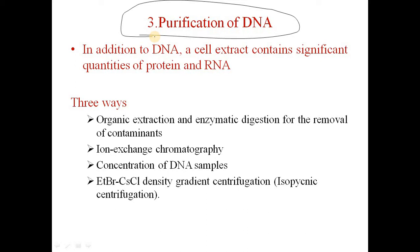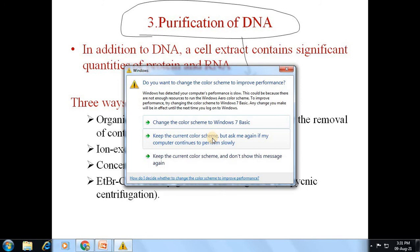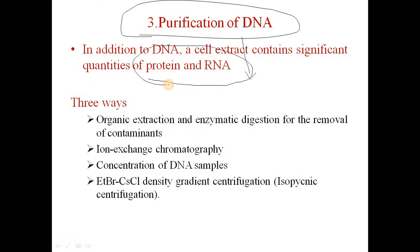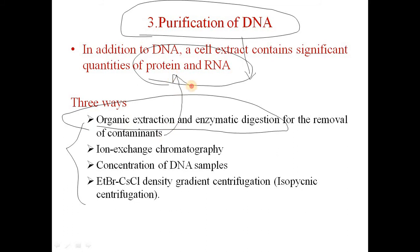The third and most important step is the purification of DNA. This is very crucial because it gives us the final results. Since there is protein and RNA present along with the DNA, there are different methodologies to separate them from the cell extract. These include: organic extraction and enzymatic digestion for removal of contaminants, ion exchange chromatography, concentration of DNA with salts, and ethidium bromide-cesium chloride density gradient centrifugation, also called isopicnic centrifugation.